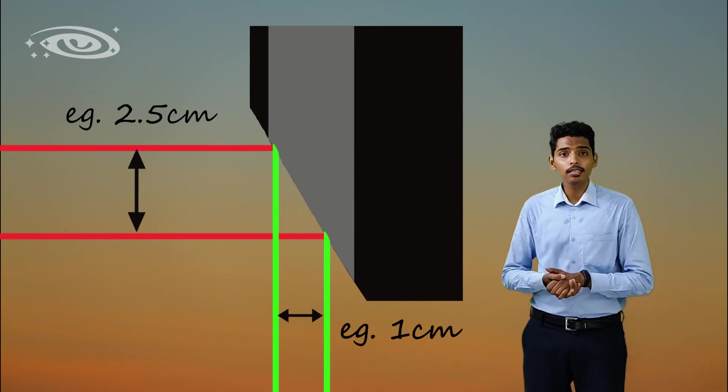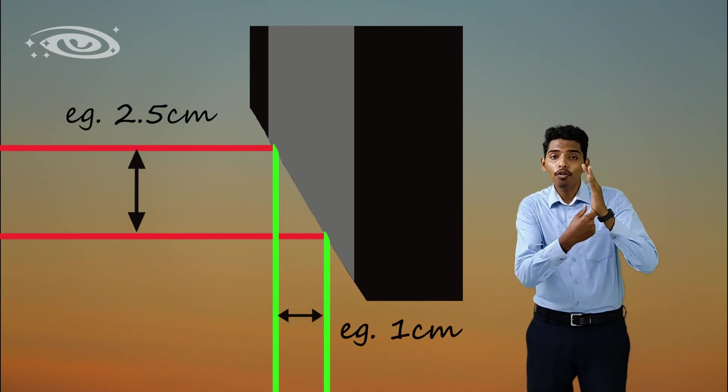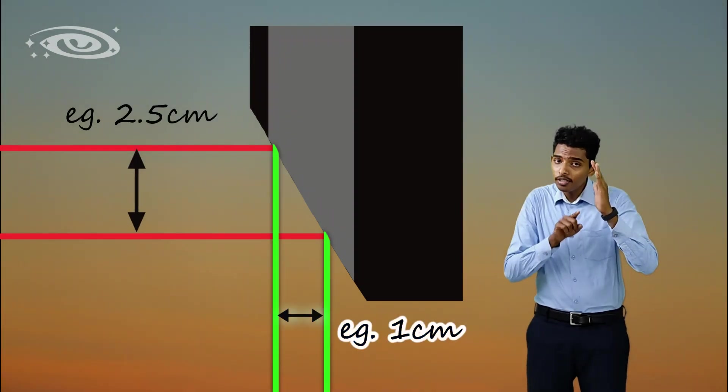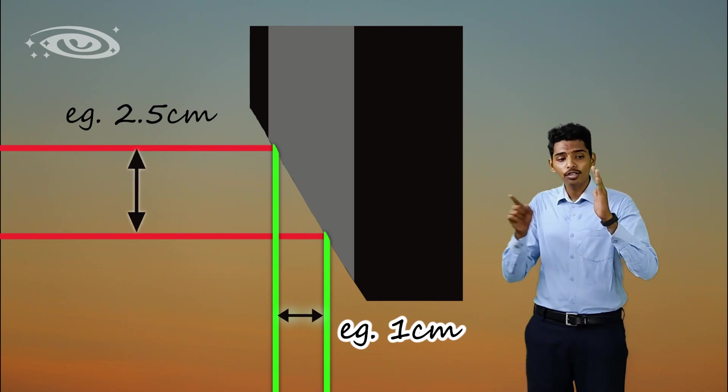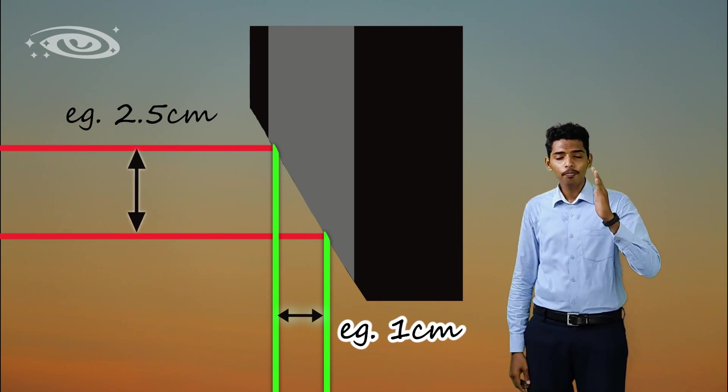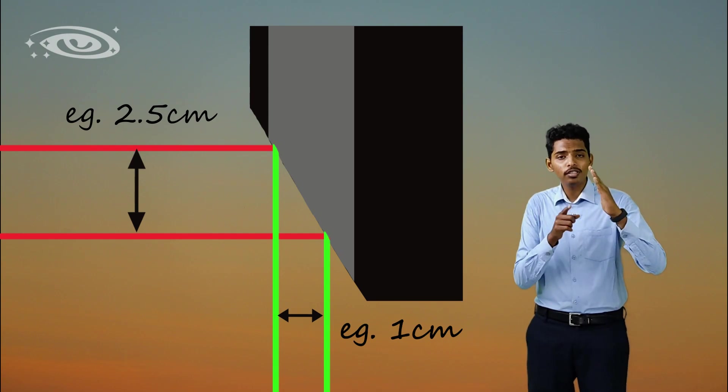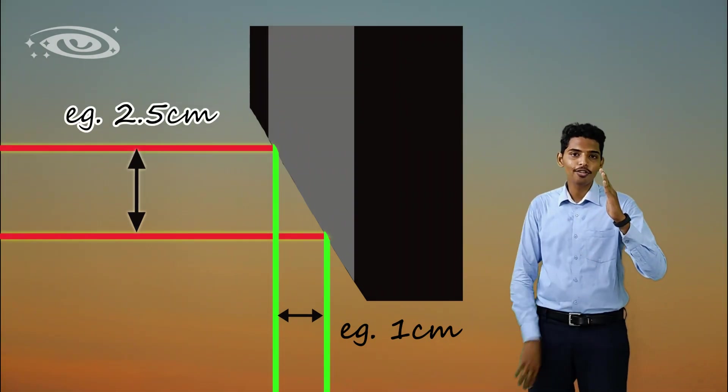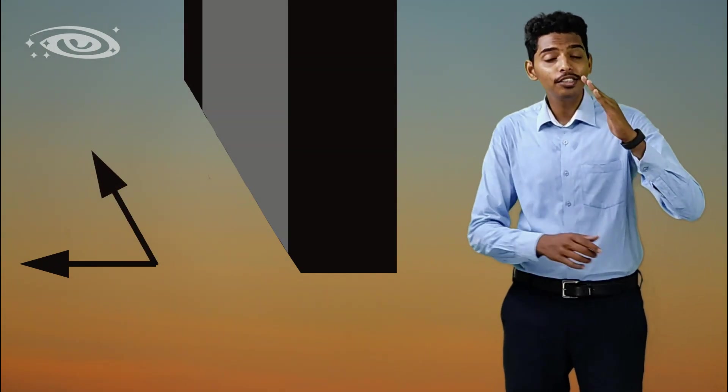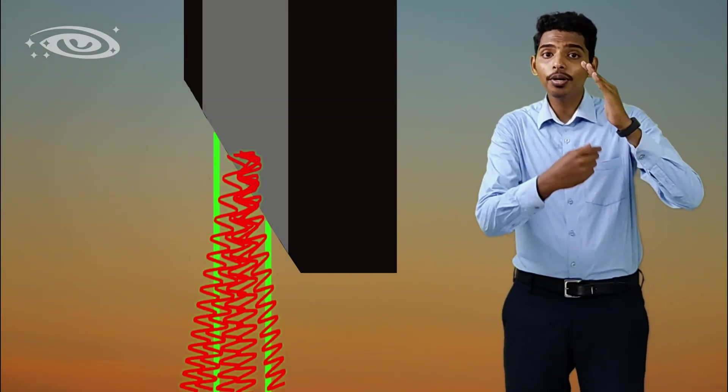Line focus principle states that the effective focal spot size is always smaller than the actual focal spot size, or the actual focal spot size is always larger than the effective focal spot size. So by angling the target, we can achieve the smaller x-ray beam size.